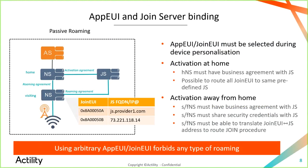The device comes on a network that doesn't know about it, so it has to search for the home network for that device. That is done using the AppEUI identifier to query a particular join server about the home network server. Of course, you must have business agreements between the visited network server, home network server, and the join server. If a unique join server is not associated to an AppEUI, it will not be possible to translate a JoinEUI into a particular join server and in turn to a particular home network server — and activation away from home will simply not work.